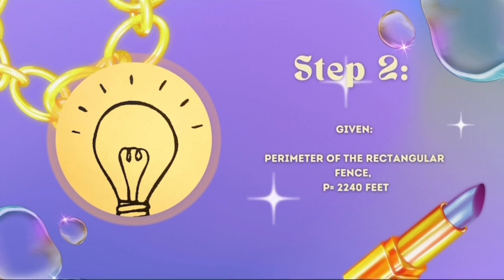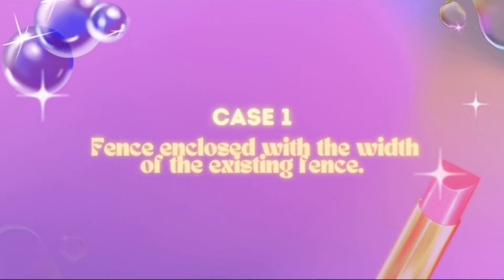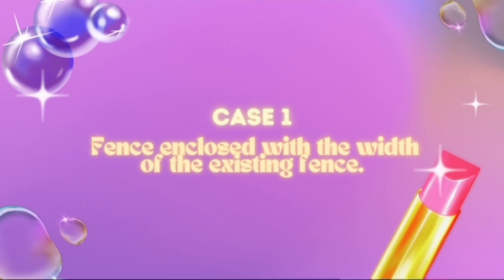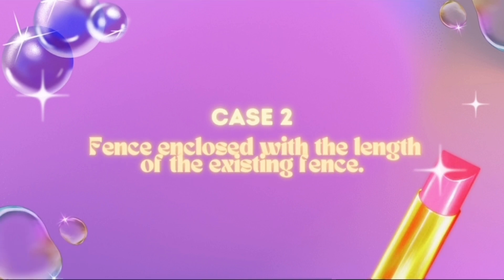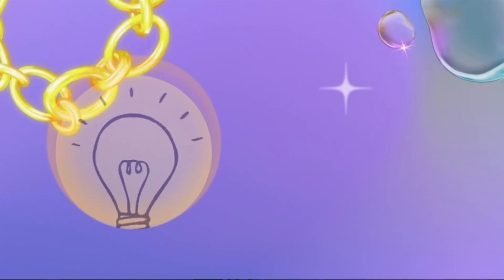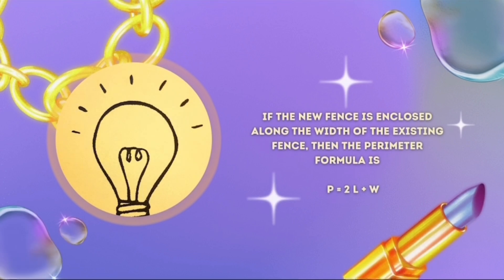It was mentioned that the new fence is to be enclosed along one side of the existing fence, but it was not clearly mentioned which side — the length or the width. Hence, we will form two cases: for case number one, the fence encloses along the width of the existing fence; for case number two, the fence encloses along the length of the existing fence.